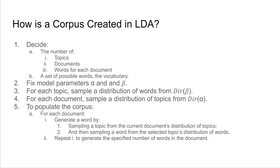We now tell the story of how a corpus is generated in LDA — this is the heart of LDA. To create a corpus, before filling it with words, you have to create a configuration: decide how many topics you want, how many documents there will be, the number of words in each document, and the vocabulary — the set of possible words. Once configured, choose the parameter alpha and the parameter beta, which will be used in filling the corpus with words.